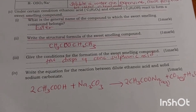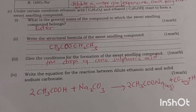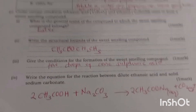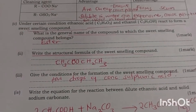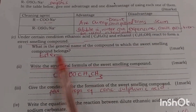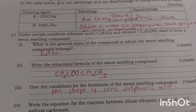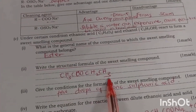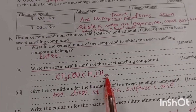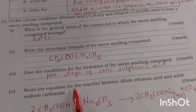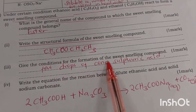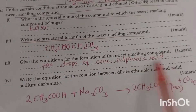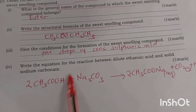An acid and ethanol react to form a sweet-smelling compound. The general name of that substance is an ester. The structural formula of the sweet-smelling substance is ethyl ethanoate. Conditions for its formation: a few drops of concentrated sulfuric acid.